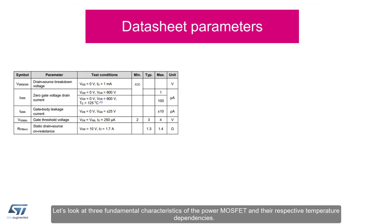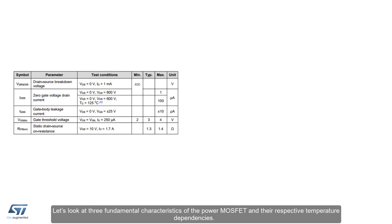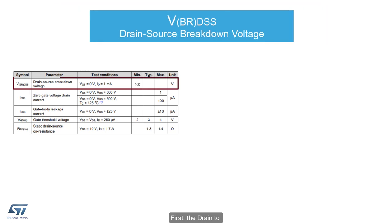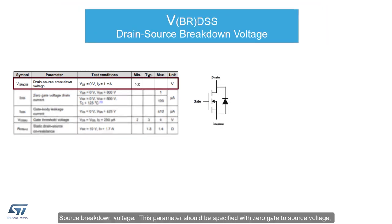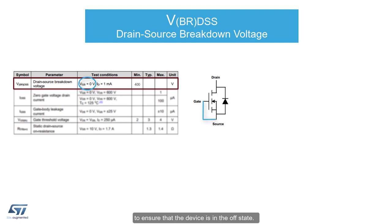Let's look at three fundamental characteristics of the power MOSFET and their respective temperature dependencies. First, the drain-to-source breakdown voltage. This parameter should be specified with zero gate-to-source voltage to ensure that the device is in the off state. The breakdown voltage must be defined by a condition of allowable drain current flow, in this case 1 milliamp.